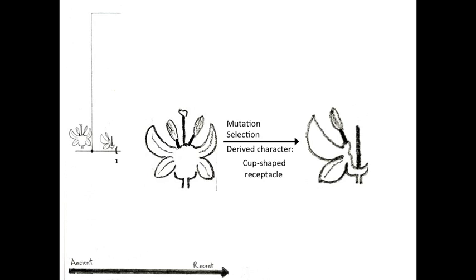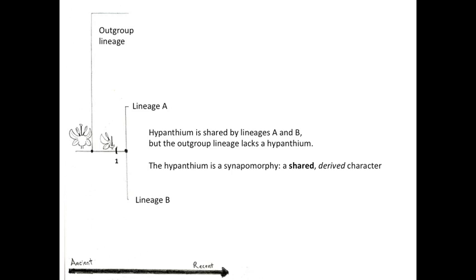Next we imagine in one lineage, mutation creating character variation in the shape of the receptacle, resulting in a cup-shaped receptacle. Initially this trait is at low frequency, but if selected for — for example, increasing pollination efficiency and reproductive success — then it increases in frequency within the population until all individuals have this particular character state.